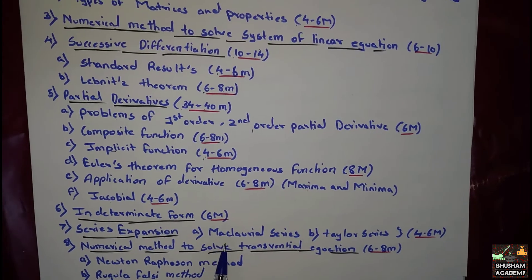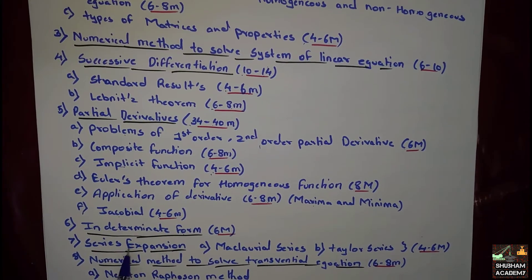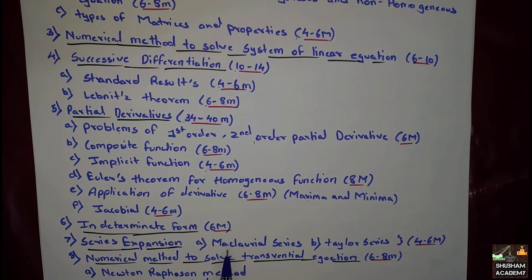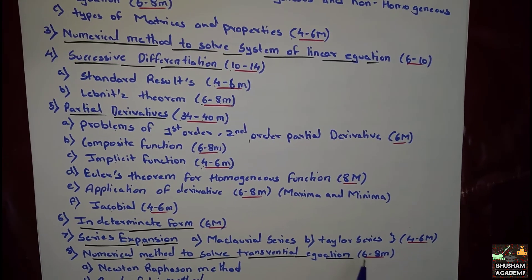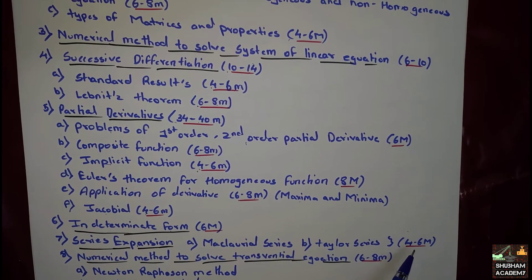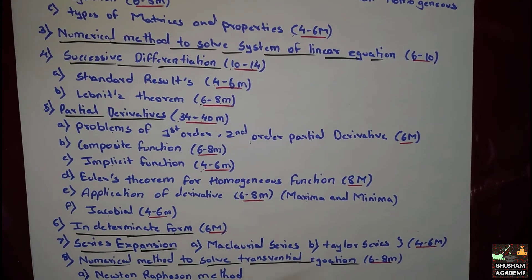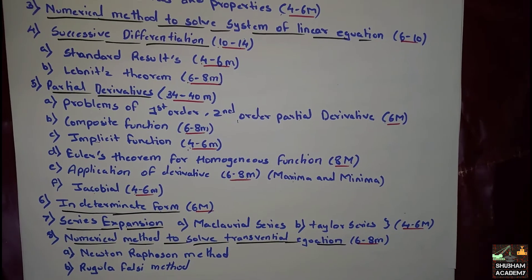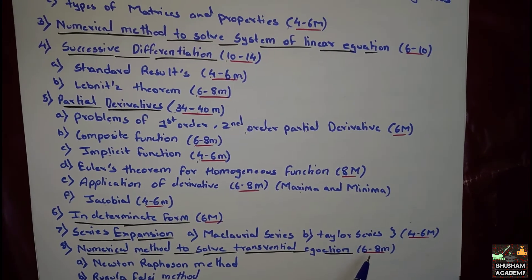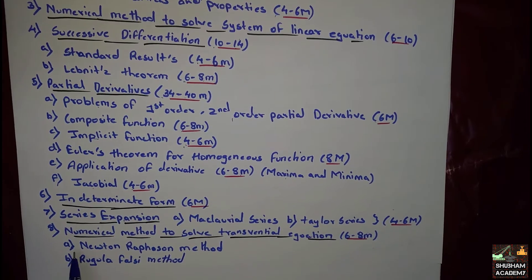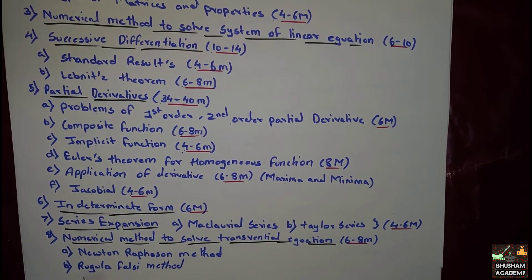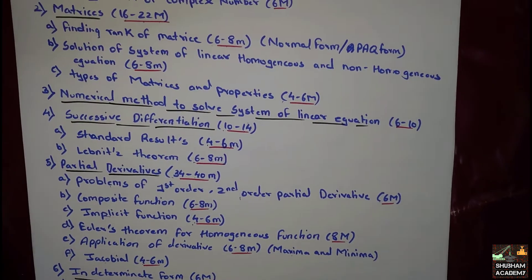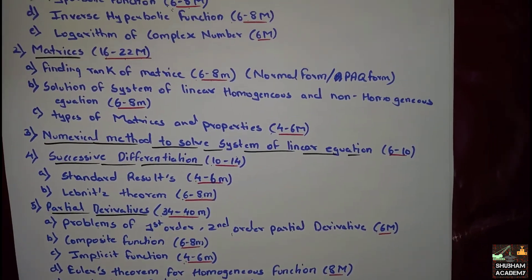Indeterminate Form — 6 marks. Module 6 and 7 is Series Expansion, which has two topics: Maclaurin Series and Taylor Series. Either of these can be asked for 4 to 6 marks. Numerical Methods to Solve Transcendental Equations — 6 to 8 marks — covering Newton-Raphson Method and Regula Falsi Method. So this is the complete overview of the topics of M1.